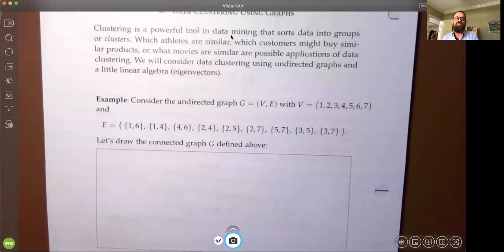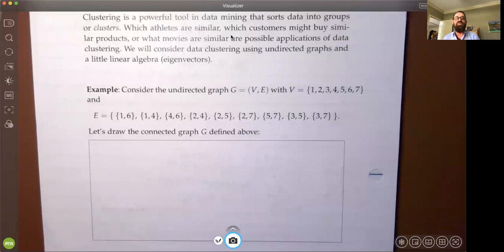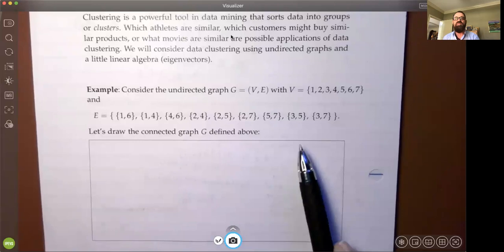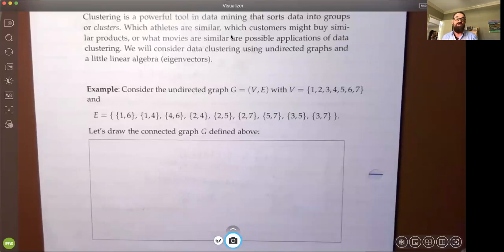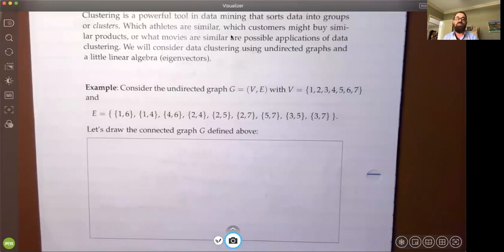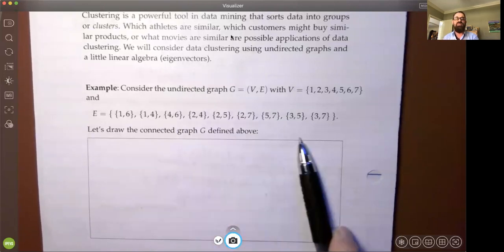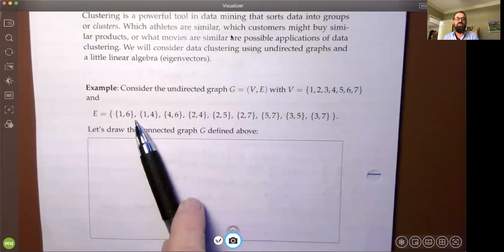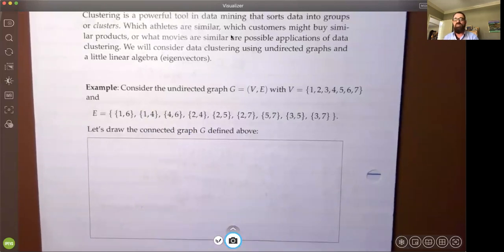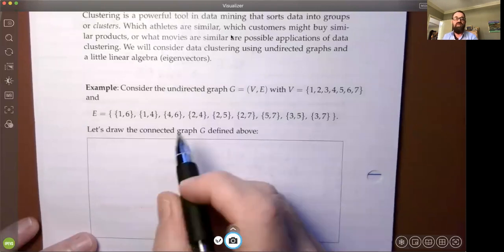As the working example, suppose we have this undirected graph G with seven vertices. I'm going to indicate the vertices by the integers 1 through 7. Let's suppose this is the edge set. This is an undirected graph, so we use curly brackets for the edges. Suppose that the edges are there and we're going to draw the graph as indicated by these edges.